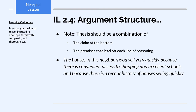Finally, a note about thesis statements. The thesis in an extended argument should be a combination of the primary claim and the premises that lead off each line of reasoning. For instance, the thesis of that argument would be something like: the houses in this neighborhood sell very quickly because there is convenient access to shopping and excellent schools and because there is a recent history of houses selling quickly.